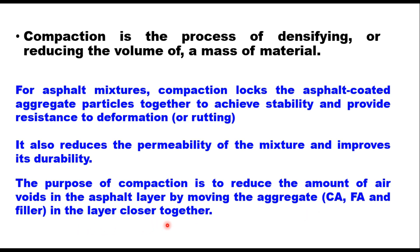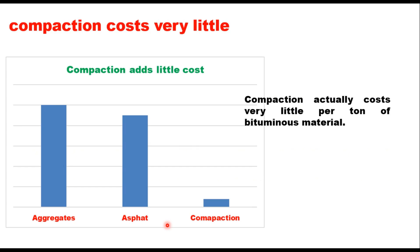In recent years, the non-availability of quality aggregates has resulted in a rise in their cost. Similarly, the price of bitumen is also increasing day by day. Therefore, the cost relationship between material and compaction process has become more important now than earlier. Compaction actually costs very little per ton of bituminous material, and if you compare the cost of three items — aggregates, asphalt, and compaction — the cost of compaction is very little compared to the cost of aggregate and asphalt in a mixture.